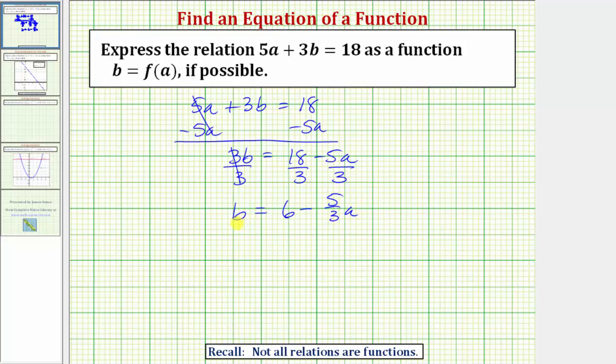Notice how now we have b expressed as a function of a, so we can say b equals f of a, which equals six minus 5 thirds a. It's also very common to write this as b equals f of a, which equals negative 5 thirds a, plus six. This would be the slope-intercept form of a linear function. But either form is acceptable because they are equivalent.